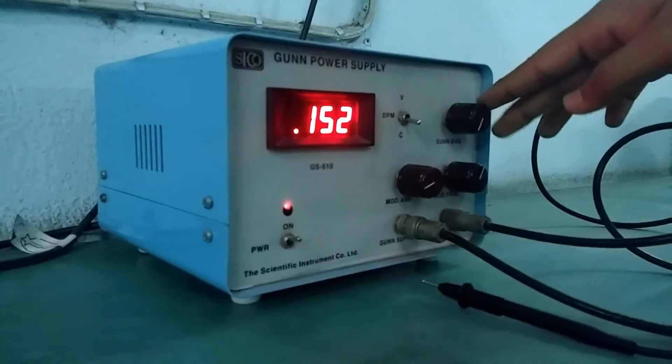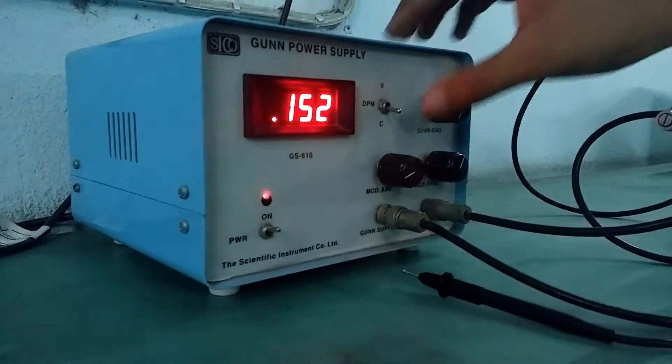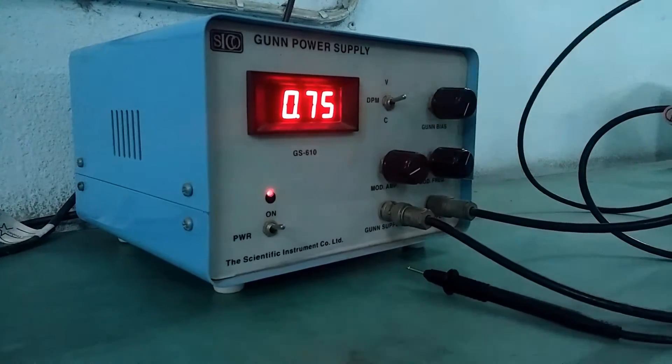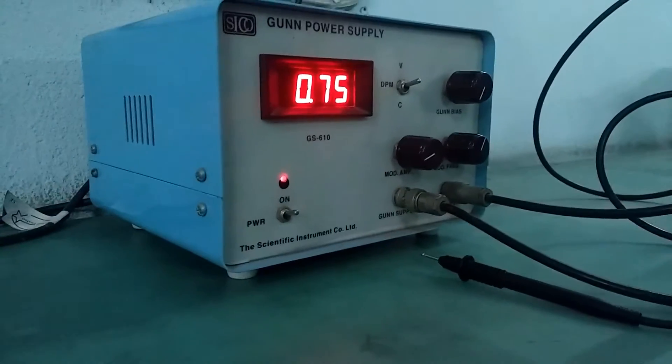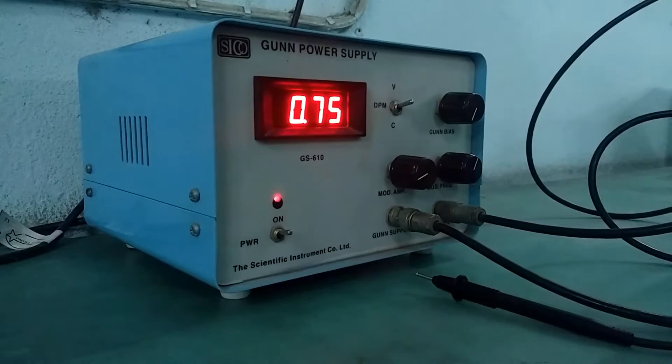The first plot, for the first plot, we will increase the Gunn bias voltage and take corresponding current readings. So, that we will have a V and I plot. This is the first graph.